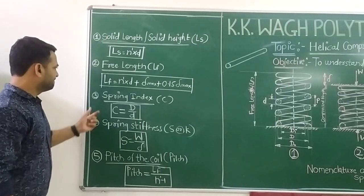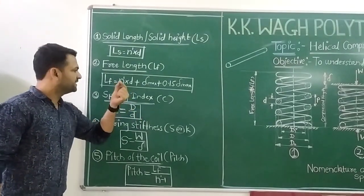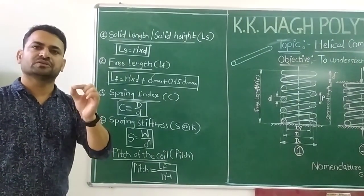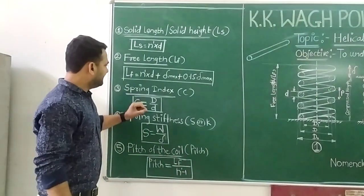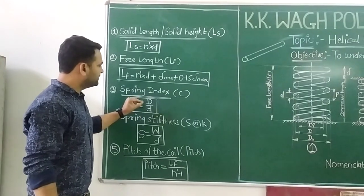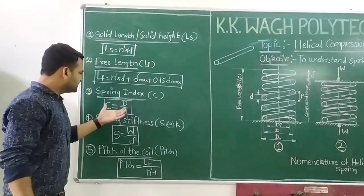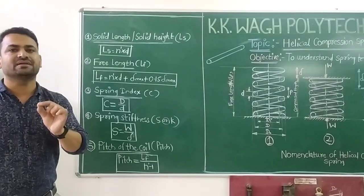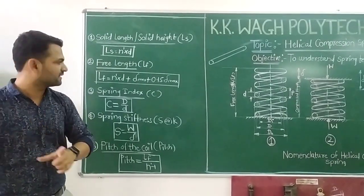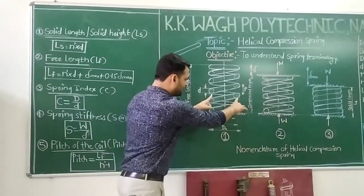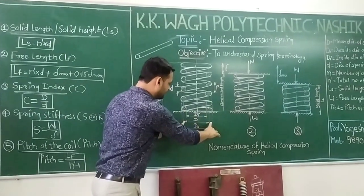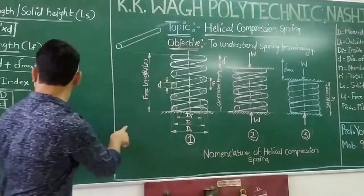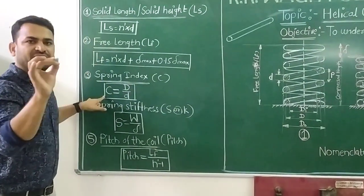The third terminology is spring index, denoted by C, which plays a very important role in the design of springs. Spring index C = D / d, which is the ratio of the mean coil diameter to the diameter of the wire. This ratio gives the spring index.